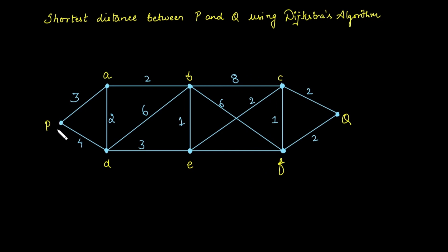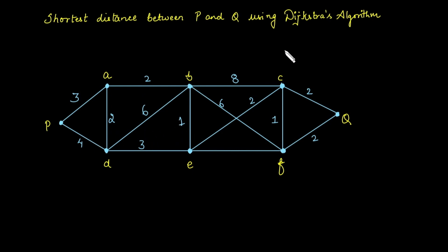In this video, we are going to find the shortest distance between the vertex P and Q using Dijkstra's algorithm. In the previous video, I have explained the full procedure for how to evaluate the shortest distance between any two vertices using this algorithm. Let's explore the same algorithm with the help of this diagram.